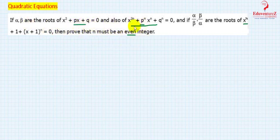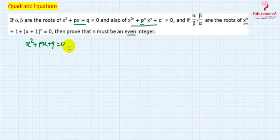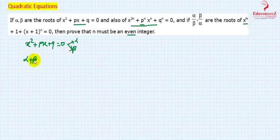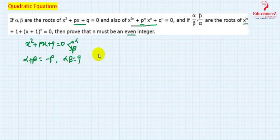Alpha and beta are roots of both equations. For x squared plus px plus q equal to 0, the roots are alpha and beta. So sum of roots: alpha plus beta equals minus p, and product of roots: alpha times beta equals q.